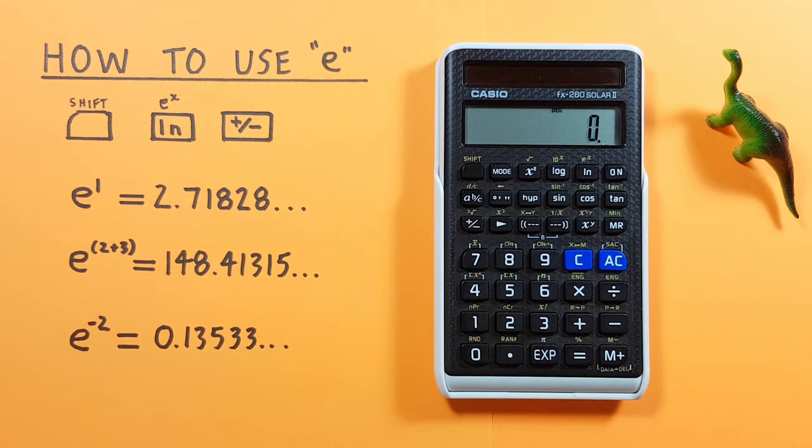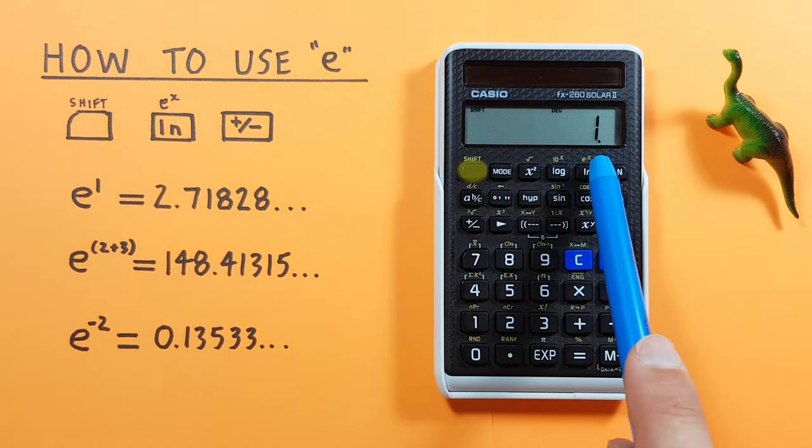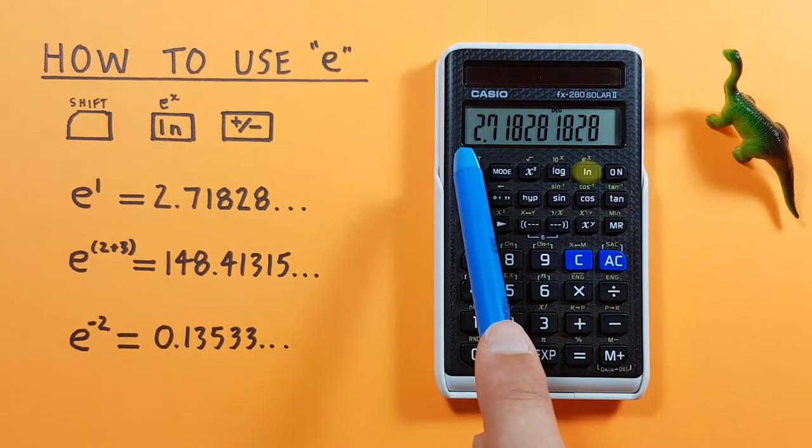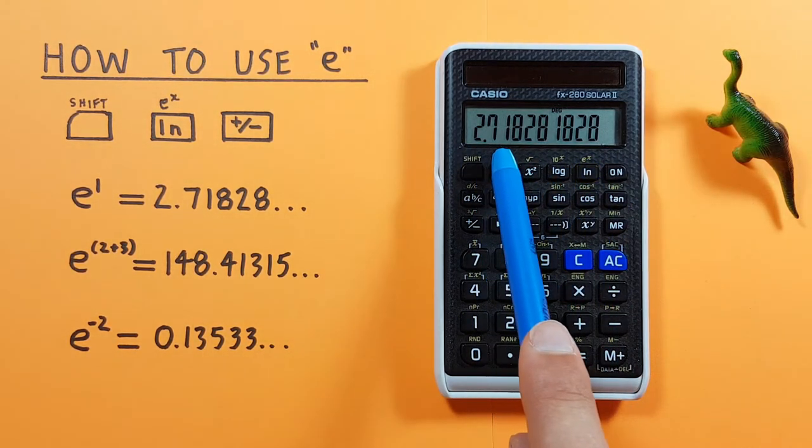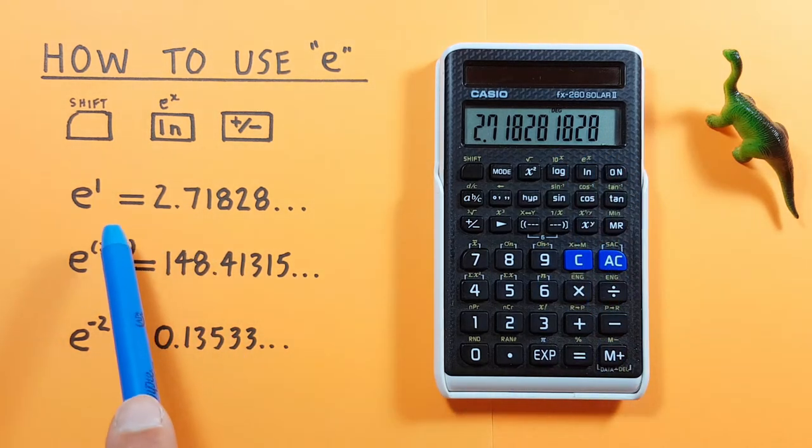If we just want to get e or Euler's number, we can use e to the power of 1. To do this, we start by placing our exponent on the screen, so that's 1, and then pressing shift ln, and we see that gives us 2.71828 etc., or the e constant.